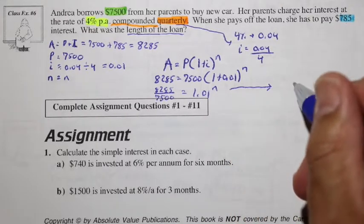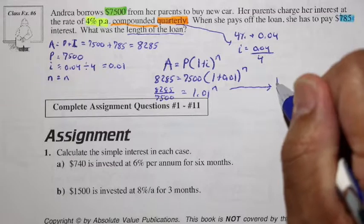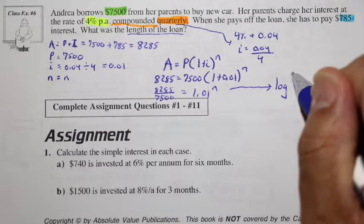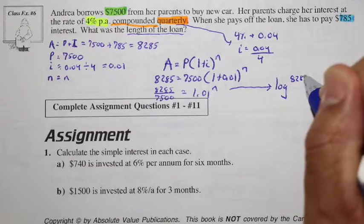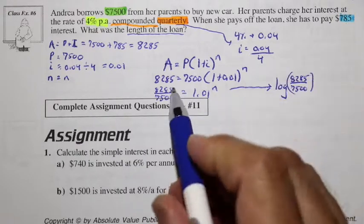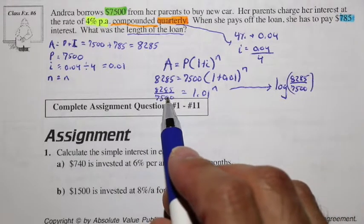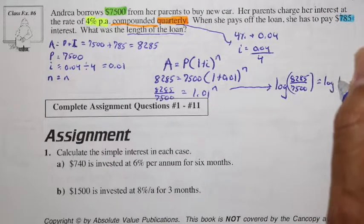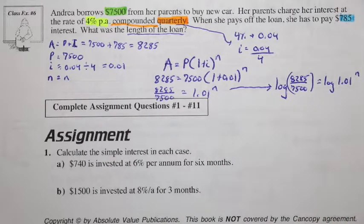So the log of 8,285 over 7,500, which again is a ratio of the final divided by the initial, is equal to the log of 1.01 to the exponent N.